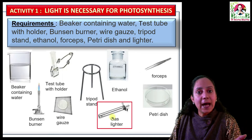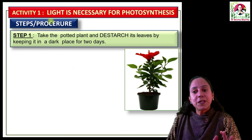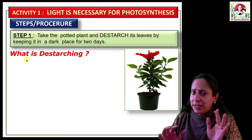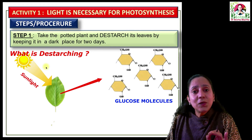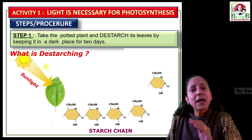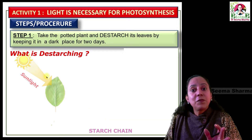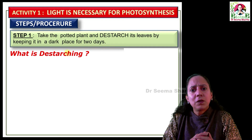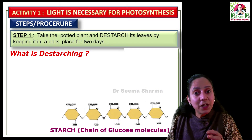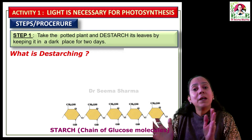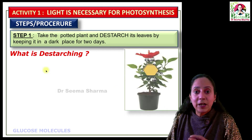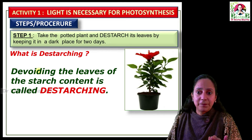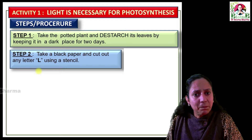We also need petri dish and lighter. Now, step one is to take a potted plant and de-starch its leaves by keeping it in a dark place for two days. During photosynthesis, glucose is formed, which is converted into starch in the leaves and then transported to each part of the plant. When we keep the plant in a dark area, the chances of photosynthesis are very low, and the stored starch is reconverted into glucose and utilized by the plant for its basic requirements. After two days, the leaves will not have any starch — this is de-starching.